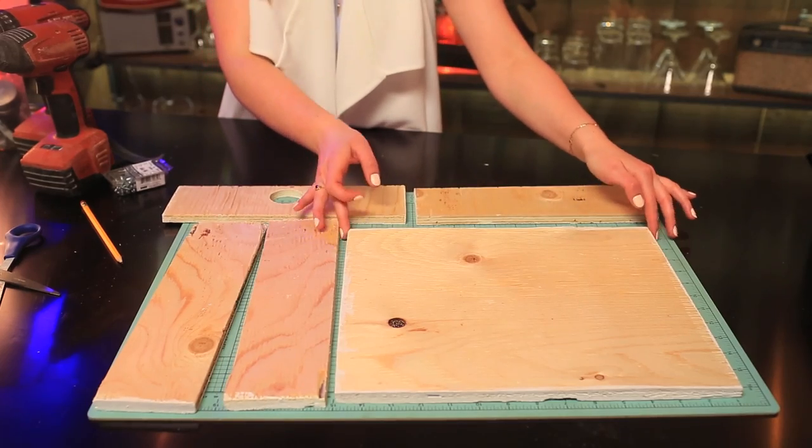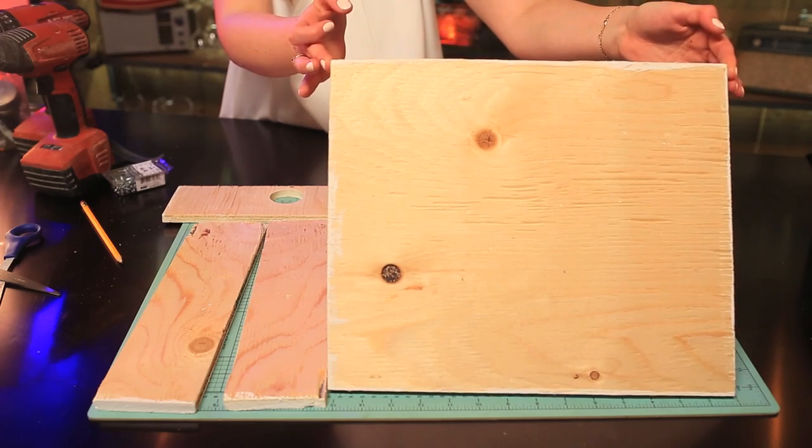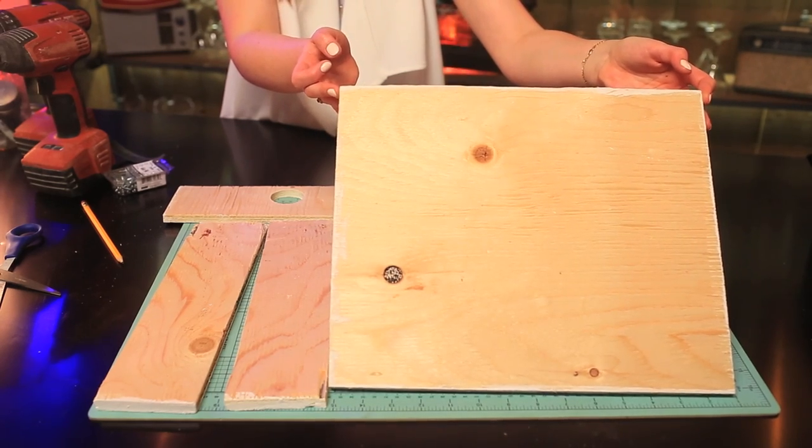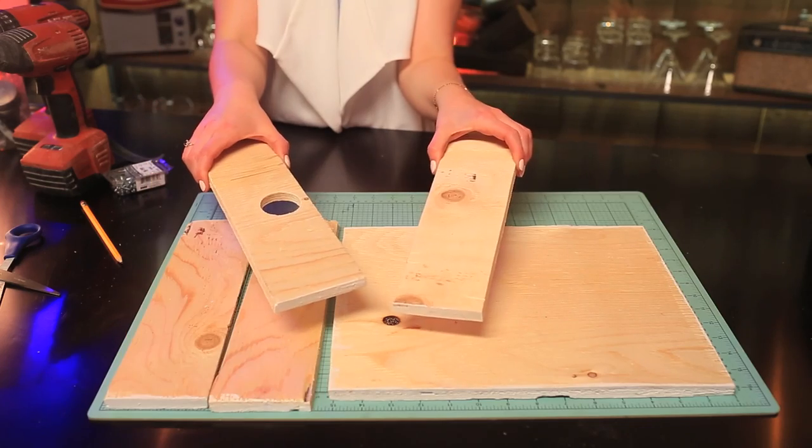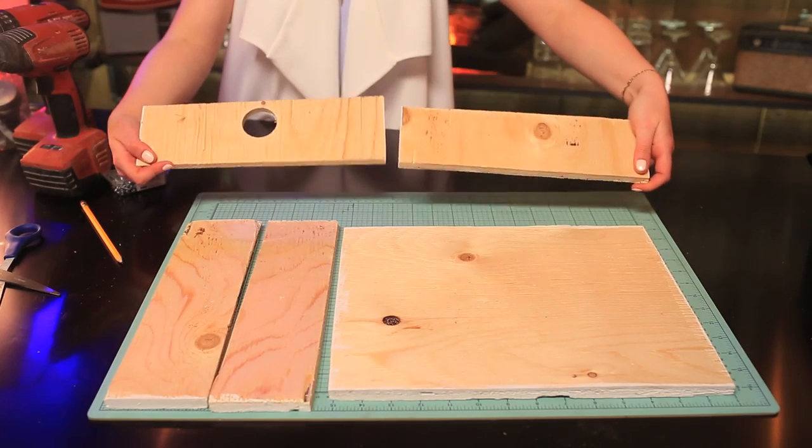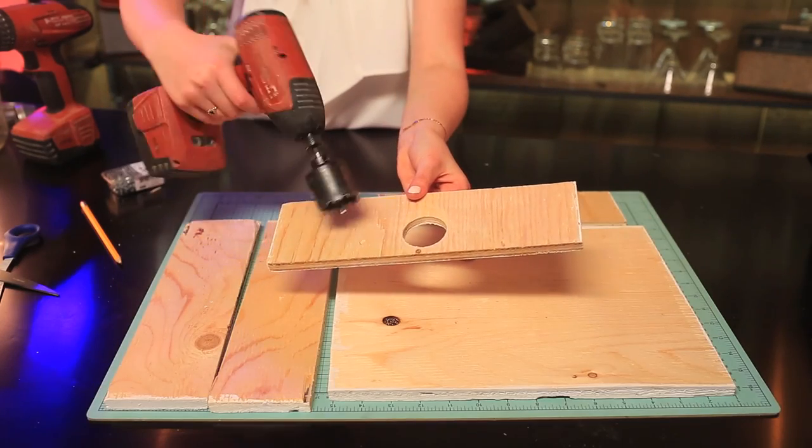The first step in making this light-up cinema box is gathering the right pieces of wood. You'll need one rectangle that's 14 and 3/4 inches by 12 inches, two pieces that are 13 inches by 3 and a half inches, and two pieces that are 12 inches by 3 and a half inches. All of this wood is half inch thick and we've pre-painted the outsides white. We also used a hole saw to add a hole in one of our short pieces of wood.